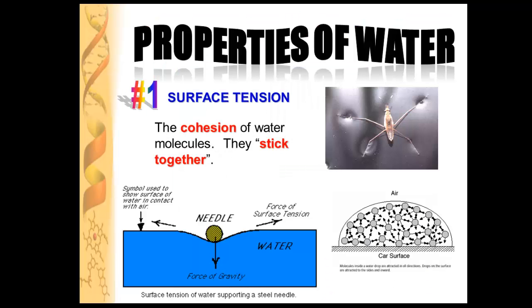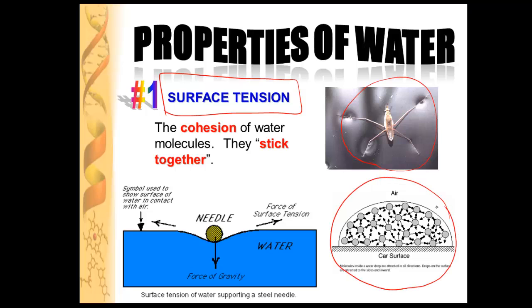We're going to need to know five properties of water that make water so important to life. The first property is surface tension. Surface tension is clearly seen if you've ever looked at a water strider, or placed a paper clip or needle on top of water and it floated. The reason it floats is because all of the water molecules are sticky — they're stuck to each other through hydrogen bonds — and that pulls the surface apart where the water strider moves.